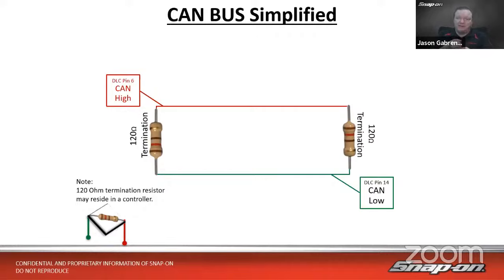We hooked up to a 2018 Volvo that has Ethernet on it to see how it was laid out. Looking at the wiring diagram from Volvo, we see at the DLC on pins 6 and 14 there's a CAN bus — just a regular twisted-pair CAN bus going to a gateway module that has FlexRay, CAN, and LIN coming in and out. On this vehicle externally, we're talking CAN as our usual diagnostics. But when we get internally to the vehicle, those internal networks are Ethernet.